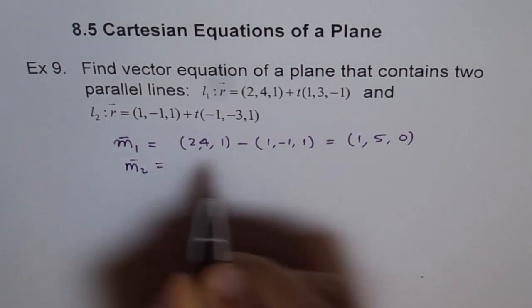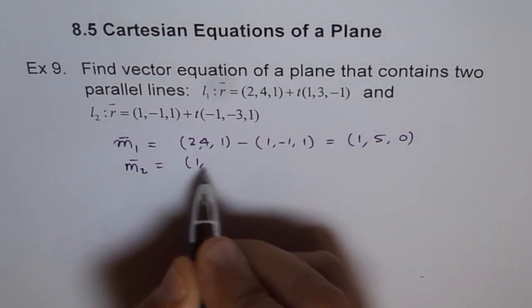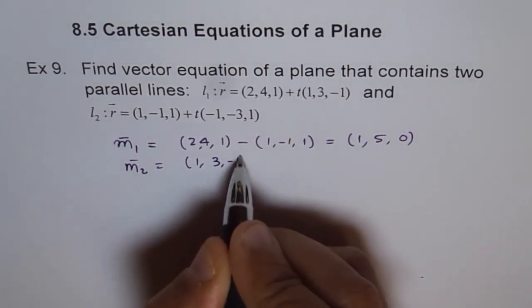One direction vector is already given to us which is 1,3,-1.